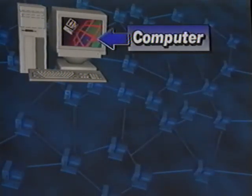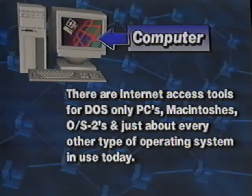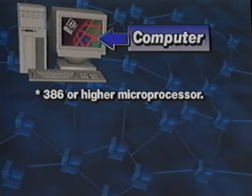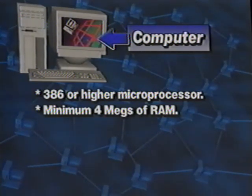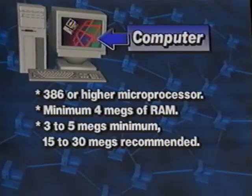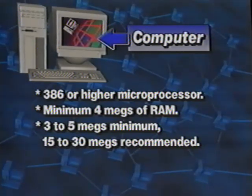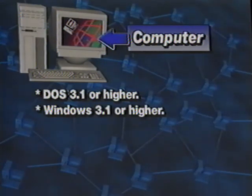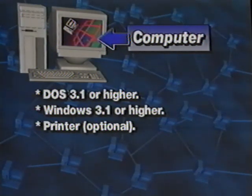There are internet access tools for DOS-only PCs, Macintoshes, OS2s, and just about every other type of operating system in use today. We will be referring to Windows-based PCs in this lesson. Your computer should have a 386, 486, or Pentium microprocessor. You will need at least four megabytes of RAM — eight megs is better and 16 megs is better yet. Your hard drive will need at least three to five megabytes of free space, but it is recommended to have at least 15 megabytes available for AOL's 3.0 version to run smoothly. You will also need a mouse, keyboard, and a monitor with VGA or higher capabilities, running DOS 3.1 or higher and Windows 3.1 or higher.